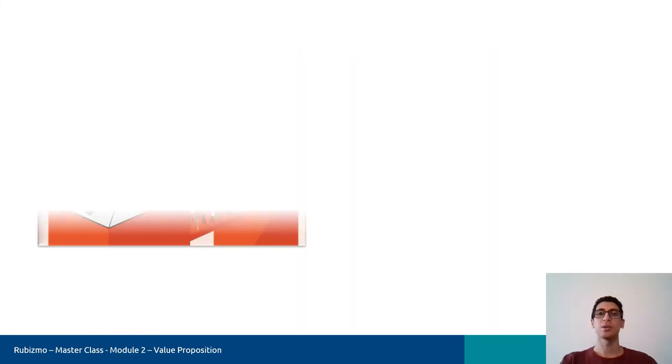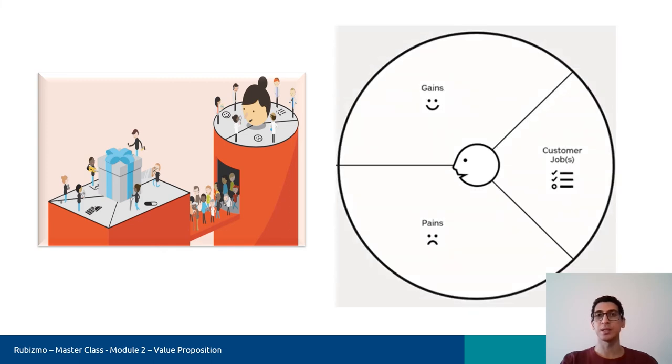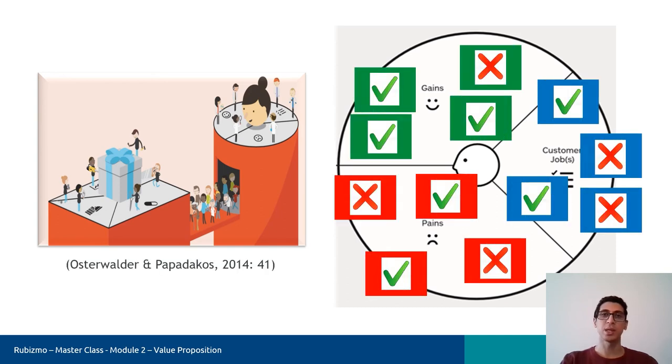Now it's time to see how the customer profile and value map fit together. We achieve fit when our customers get excited about our value proposition. It means that we have addressed something that customers care about. And as I've already mentioned, we cannot address all the pains and gains that we have identified in our customer profile. It means that some of them are solvable and some are not.